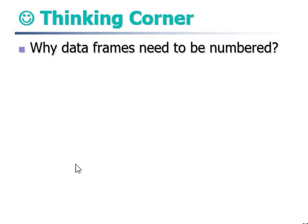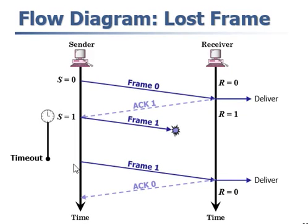Because frames, if they are not numbered, then we won't know which frame is lost and which frame is receiving. And this is a stop-and-wait mechanism on noisy channel.